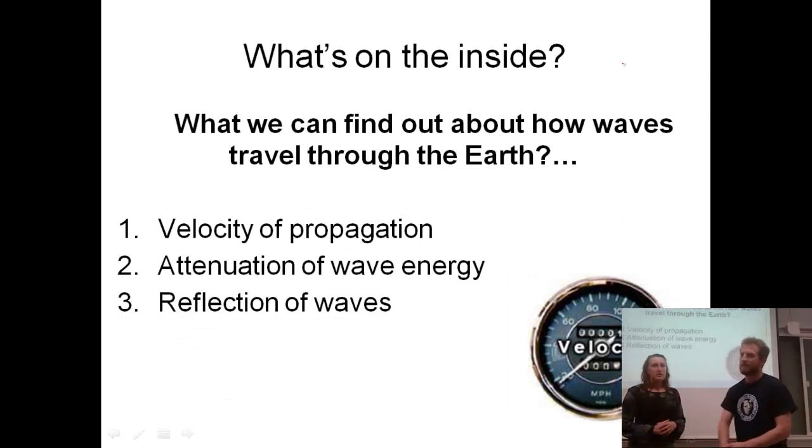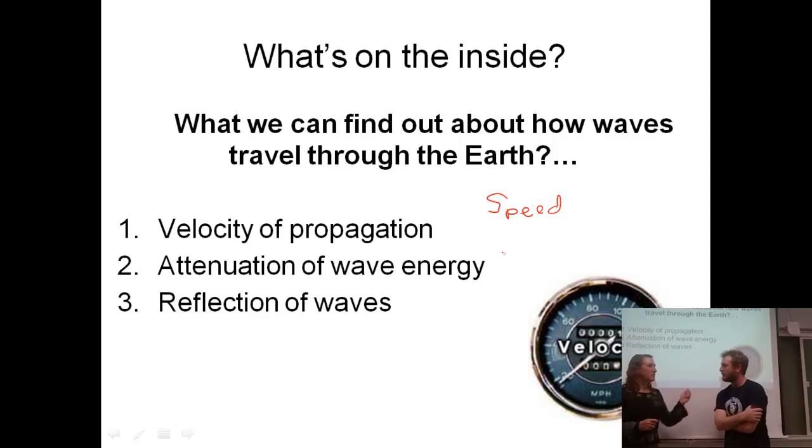So, how can we find out about how waves travel through the Earth? How can we find out about how fast they travel, so the velocity of their propagation? The attenuation of wave energy. That's a fancy word. What does attenuation mean? Like how it holds on to the energy. Is that kind of like what we're talking about? Yeah. So, we were talking about the pebble in the pond, and we said that with distance from where that pebble is thrown in, the energy decreased, right? It's attenuation. So, like the waves would be bigger, closer, and then smaller further away. Exactly.